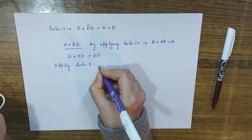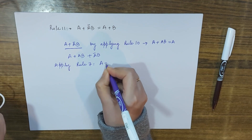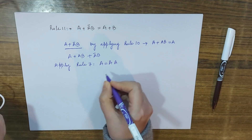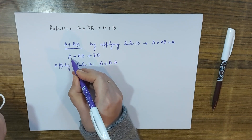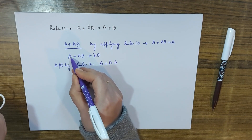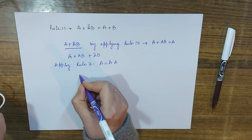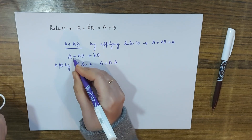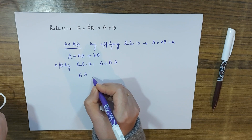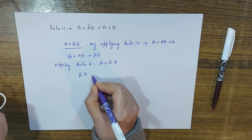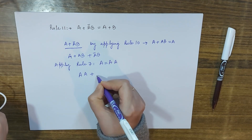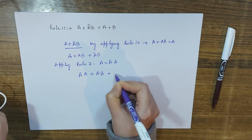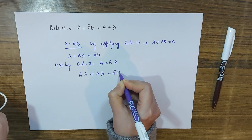Now I will apply Rule 7. Rule 7 states A equals A·A, so I replace this A term with A·A. The expression becomes A·A plus AB plus A-complement B.